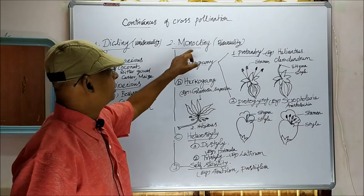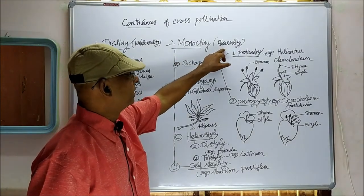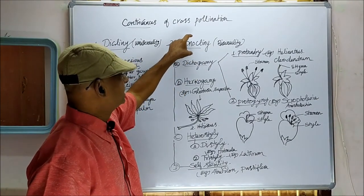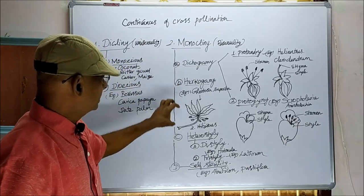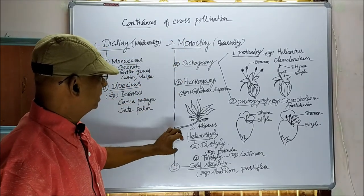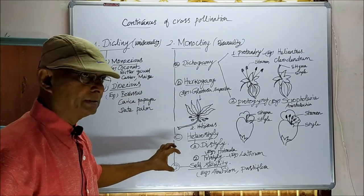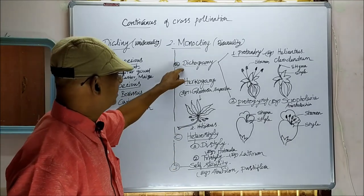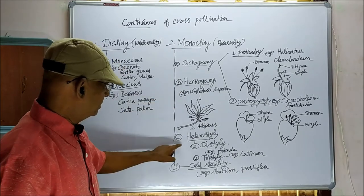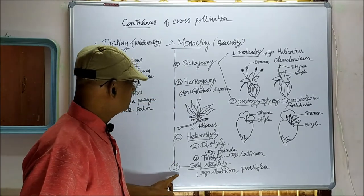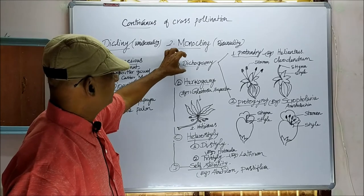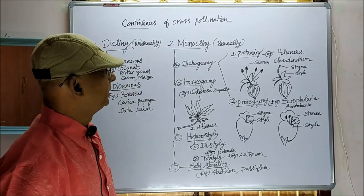Now, come to monocliny and bisexuality. In monocliny bisexuality, there are four conditions, four classifications: one is dicogamy, second is herkogamy, third is heterostyly, and fourth is self-sterility. Now, first we will see about dicogamy.